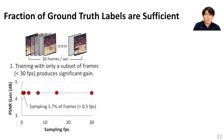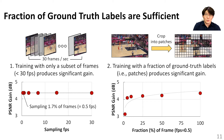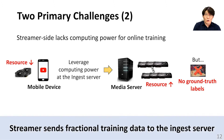First, because video frames bear large redundancy, training with only a subset of frames still produces almost the same quality gain as having all frames. Second, in addition to sampling of frames, training with a fraction of ground-truth labels — namely patches — still provides significant training gain. Combining these two factors, we can transmit ground-truth labels to the media server using a fairly small amount of bandwidth. For example, sending 5% of a frame every 2 seconds with JPEG compression requires only 124 kilobits per second. Our solution is that the streamer sends fractional training data to the ingest server.